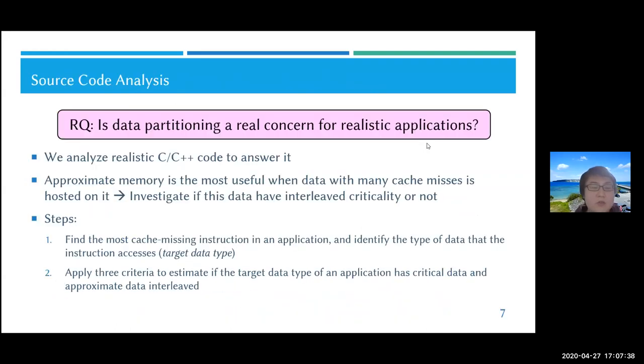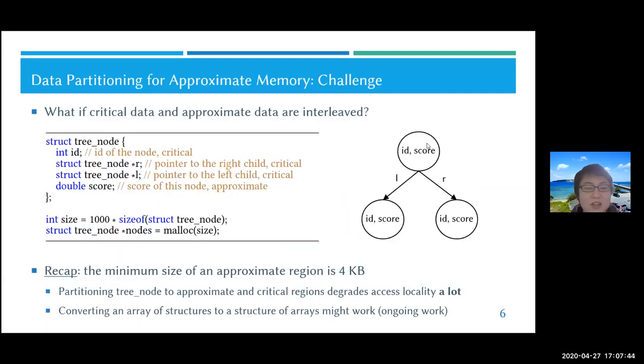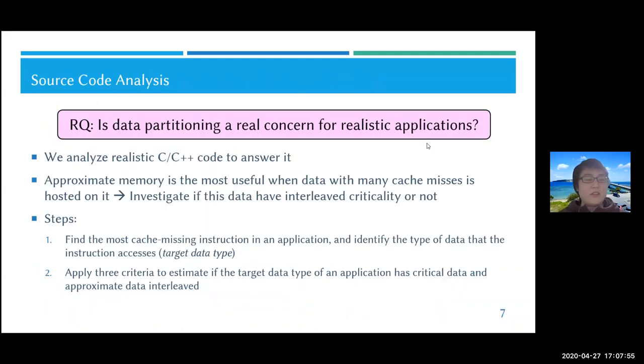The research question in this work is: is this a real concern for realistic applications? If you don't have such data structures in real world applications, it's not a problem. To answer it, we analyze realistic C/C++ code. The general idea is that approximate memory becomes most useful when data with many cache misses is hosted on it. We can investigate if this type of data has interleaved criticality or not.